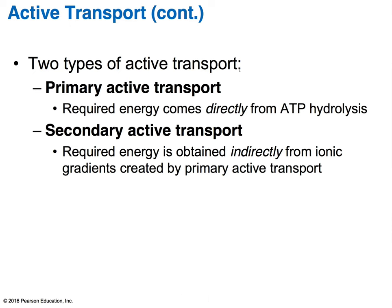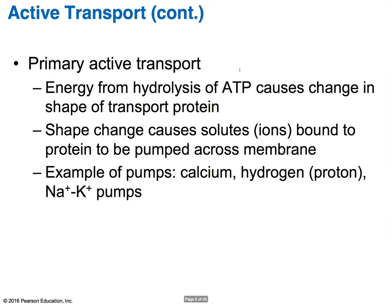The two types of active transport are primary and secondary. In primary active transport, the energy comes directly from hydrolyzing ATP. In secondary active transport, the energy comes indirectly from the ionic gradients created by primary transport. In primary active transport, the energy from hydrolyzing ATP causes a change in the shape of the transport protein, which pumps the solutes across the membrane. Examples include the sodium-potassium pump, calcium pumps, and hydrogen or proton pumps.